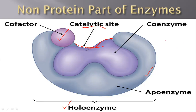Another part of the enzyme is called a coenzyme. Coenzymes are organic cofactors and are derivatives of vitamins. Common coenzymes include ATP, NAD+, and FAD+. These perform very important functions in respiration and photosynthesis processes.